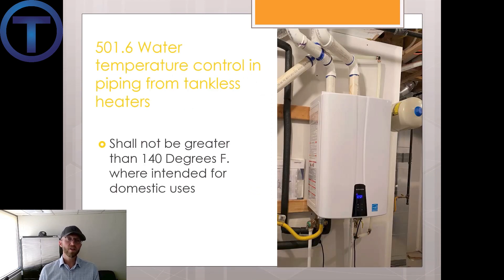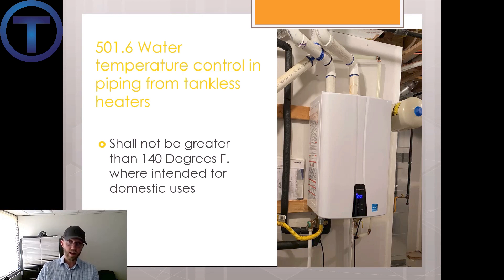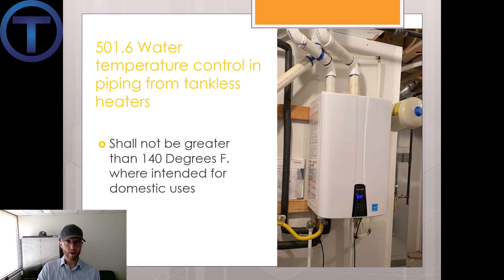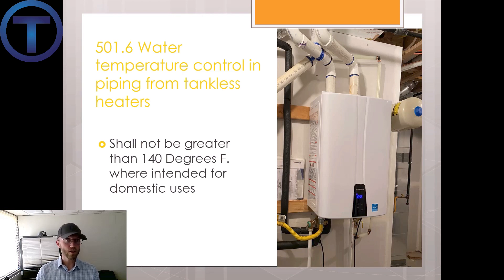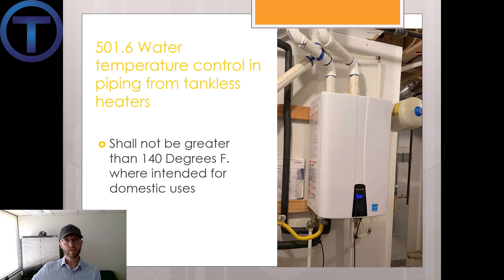Section 501.6 talks about water temperature control in piping from tankless water heaters, similar to 501.2 where we're using hot water to heat space. A tankless water heater is capable of heating water above 140 degrees — most of the time you have to make adjustments, usually internal overrides. In the commercial setting these tankless water heaters can do 160 degrees, which is probably required for commercial dishwashing. But when delivering hot water from a tankless water heater to domestic water — sinks and other fixtures — it shall not be greater than 140 degrees Fahrenheit.